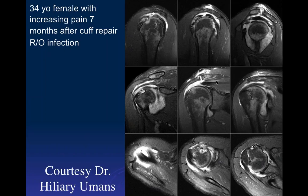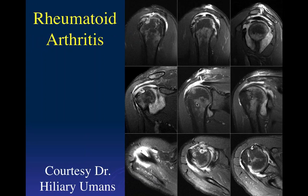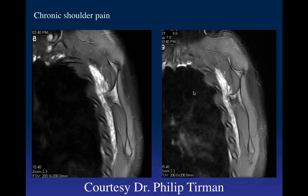In this 34-year-old with increasing pain seven months after rotator cuff repair, there is evidence of repair with a large joint effusion and marked synovial thickening, possibly with some erosion though some is post-operative. The picture looks more like inflammatory arthropathy than infection — no significant soft tissue changes suggesting infection. This turned out to be rheumatoid arthritis; the patient also had a recurrent tear.